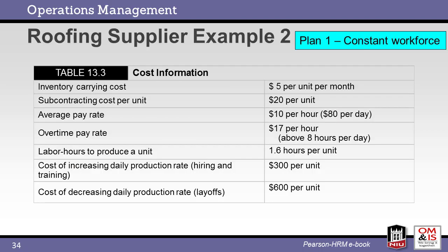Now for a second example — we see the data associated with a second roofing supplier. The assumption is that we have a constant workforce during the time under review. Carrying costs, pay rates, labor requirements, and the costs of increasing or decreasing capacity are shown. With this level of information, we can more effectively align capacity with demand.